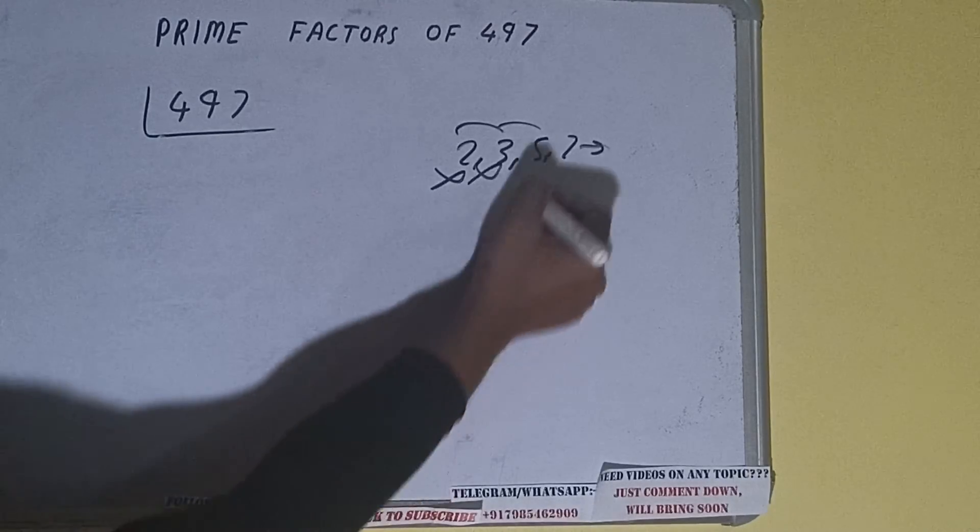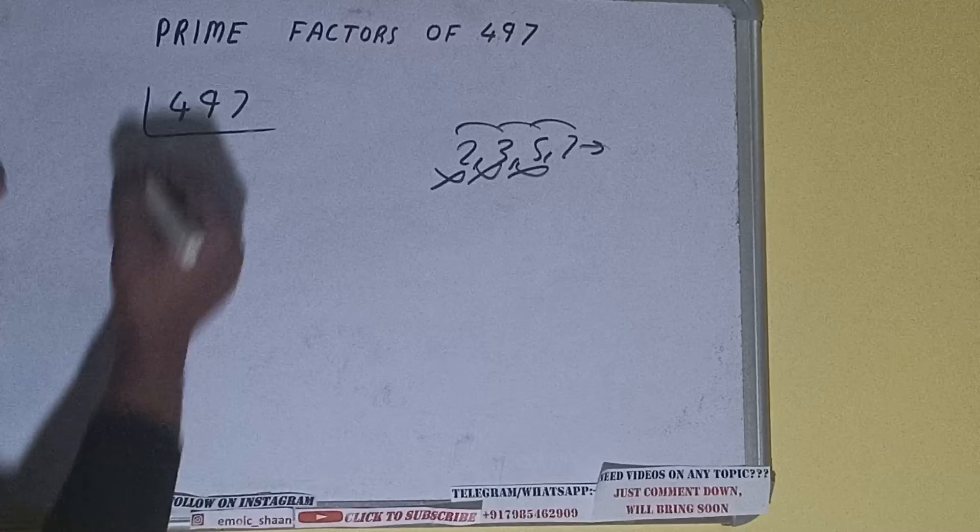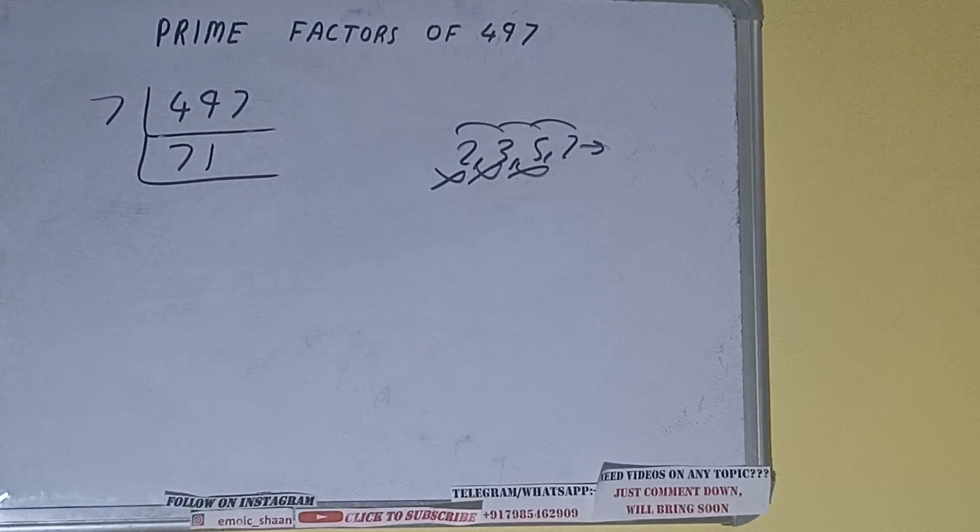Dividing 497 by 7: 7 into 49 is 7, and 7 into 7 is 1, so we get 71. Now we need to continue factoring 71.